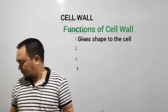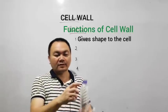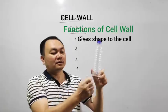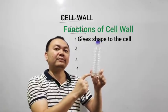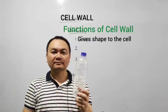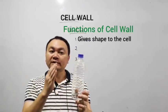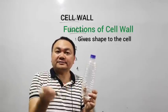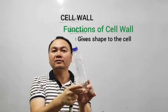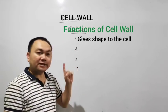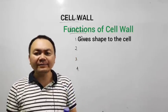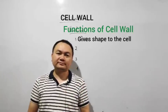The second function: Now I have some water inside. Why doesn't this water get damaged or get polluted? It's because of the presence of this wall. So the inner content of the cell is protected by the wall. Similarly, the cell wall protects the cell from mechanical damage and infection.